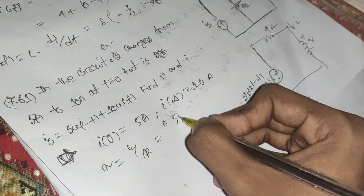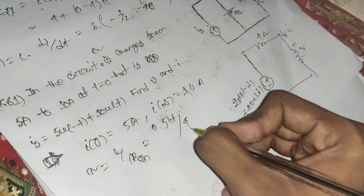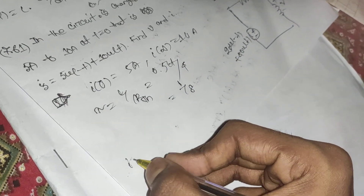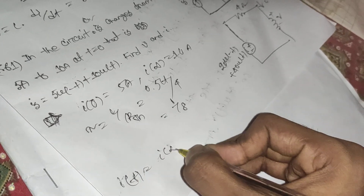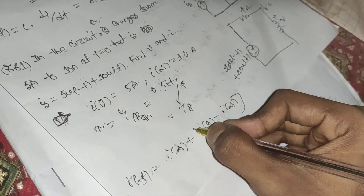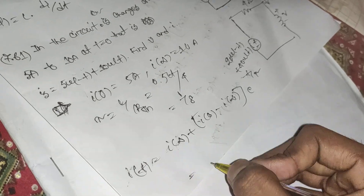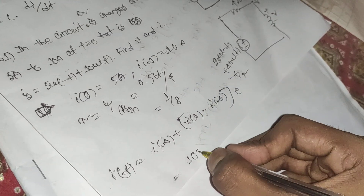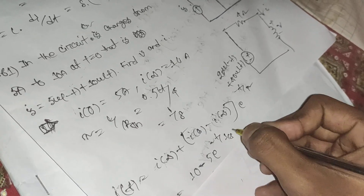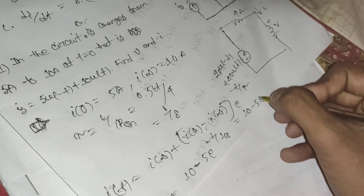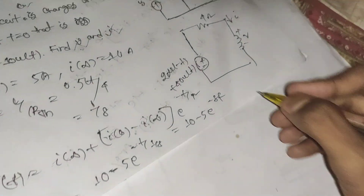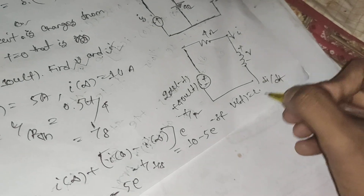Using the current equation: i(t) = i(∞) + [i(0) − i(∞)]·e^(−t/τ) = 10 + (5 − 10)·e^(−8t) = 10 − 5e^(−8t) amperes. Then v(t) = L·di/dt, which you can differentiate to find the final voltage. Thank you very much for watching.